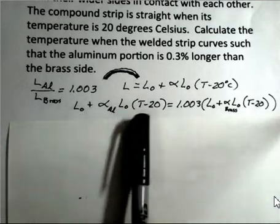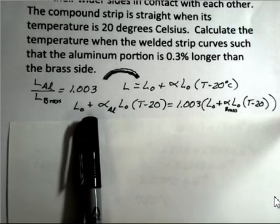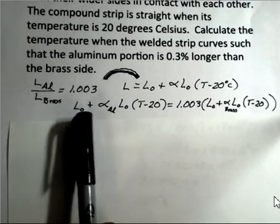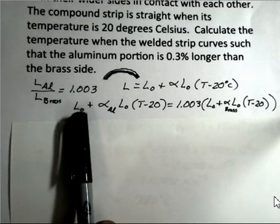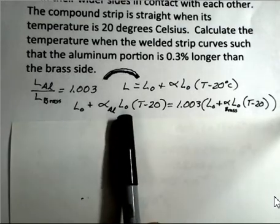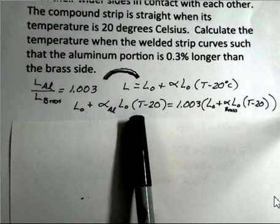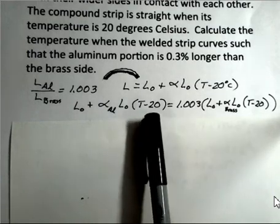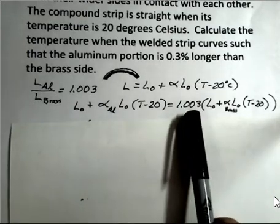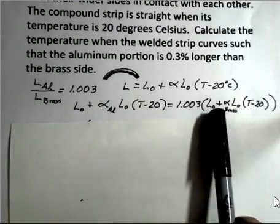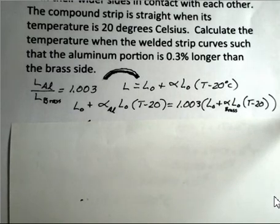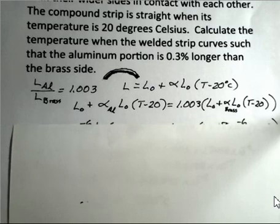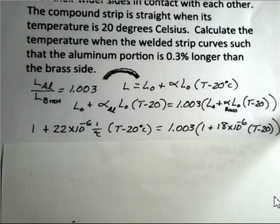So we want this to be the case. Here's the new length expression for the aluminum. The new length is the original length plus this term that represents the change in the length. So the original aluminum length, we have alpha for the aluminum, the original length of the aluminum, and T minus 20. And then over here, 1.003 times the new length for the brass. Both the brass and the aluminum are going to be increasing in length. So let's go a little bit further here, putting in our numbers.